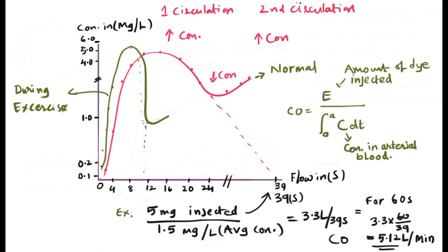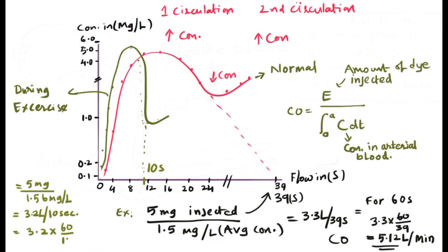During exercise, cardiac output is measured similarly, but circulation completes in 10 seconds. With 5 mg of substance injected and an average concentration of 1.56 mg per deciliter, we get approximately 3.2 liters per 10 seconds. Calculating 3.2 multiplied by 60 divided by 10 gives 19.2 liters per minute, which is the cardiac output during moderate exercise. This demonstrates how cardiac output can be calculated using different methods.